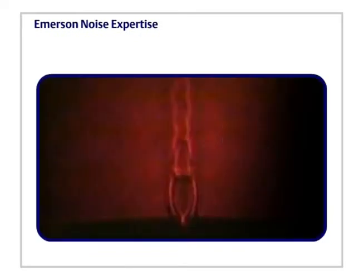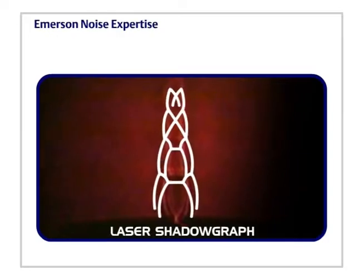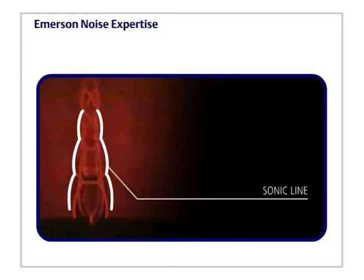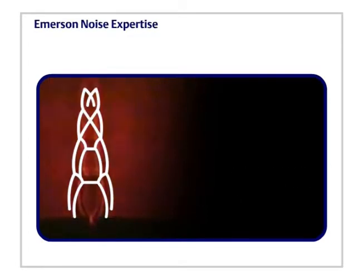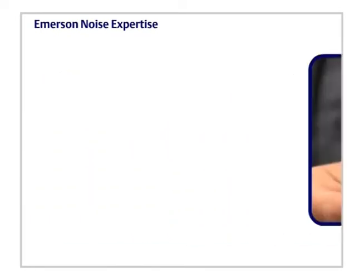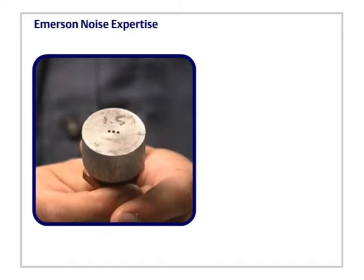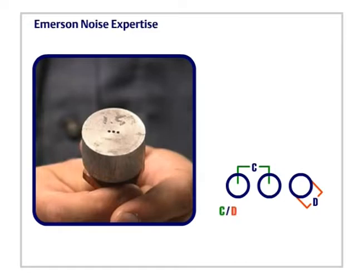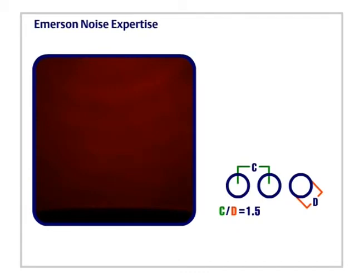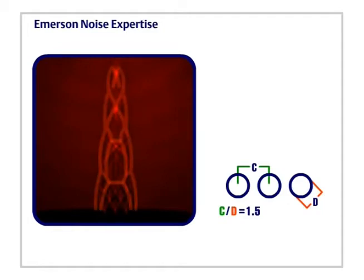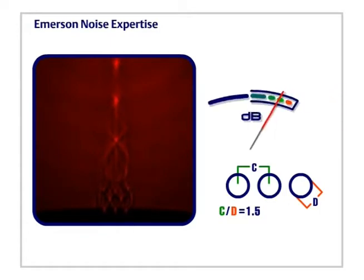Emerson uses laser shadowgraph technology to visualize and understand the differences between various types of noise reduction technologies for control valves. The following examples show the importance of jet separation to reduce noise radiation. This standard trim example demonstrates the use of a standard drilled hole: three holes, each one-eighth inch in diameter, spaced three-sixteenths inches apart, with a centerline distance to hole diameter ratio of 1.5. At low pressure, the three jets are independent from 0 to 50 PSIG. However, as the inlet pressure increases, the three jets gradually combine to become one large jet. This effect is detrimental to aerodynamic noise reduction. As the pressure drop increases, the combined jet structure continues to grow larger and noise level increases. Overall sound pressure level is 102 dBA.